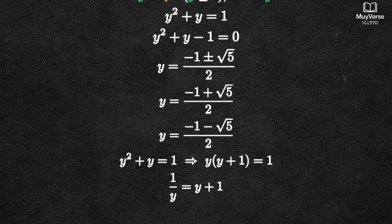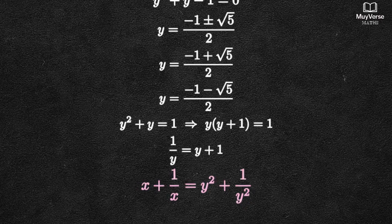We want x plus 1 over x. Since x equals y squared, our target becomes y squared plus 1 over y squared.